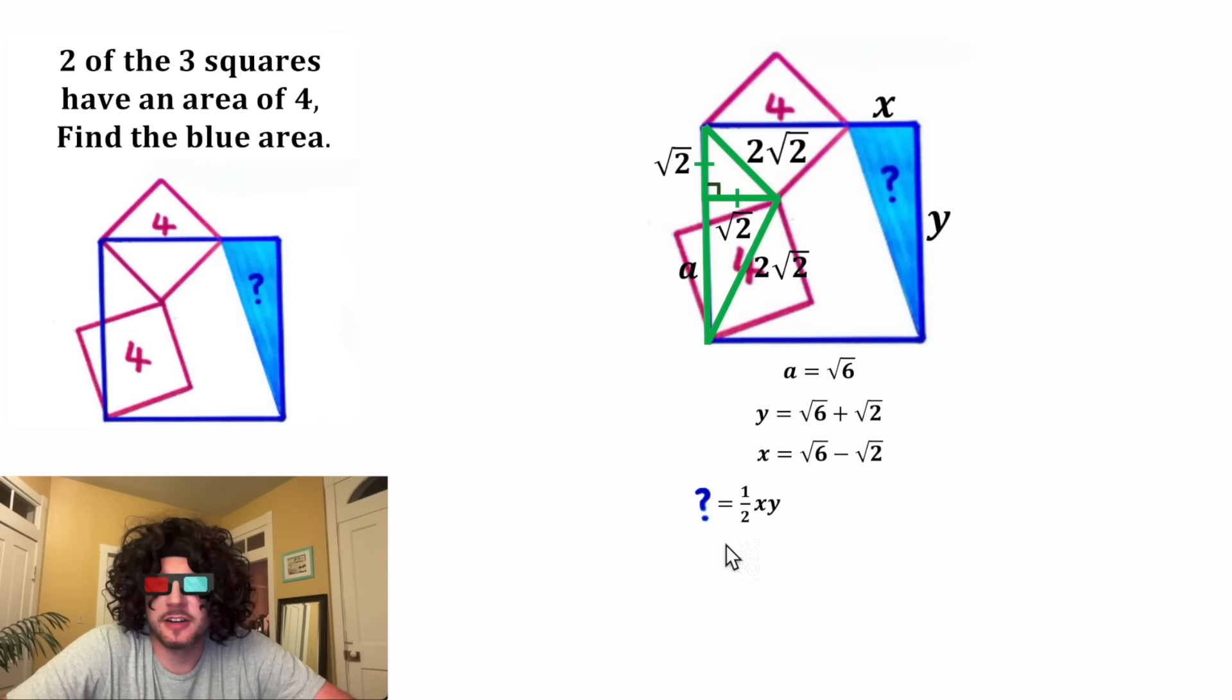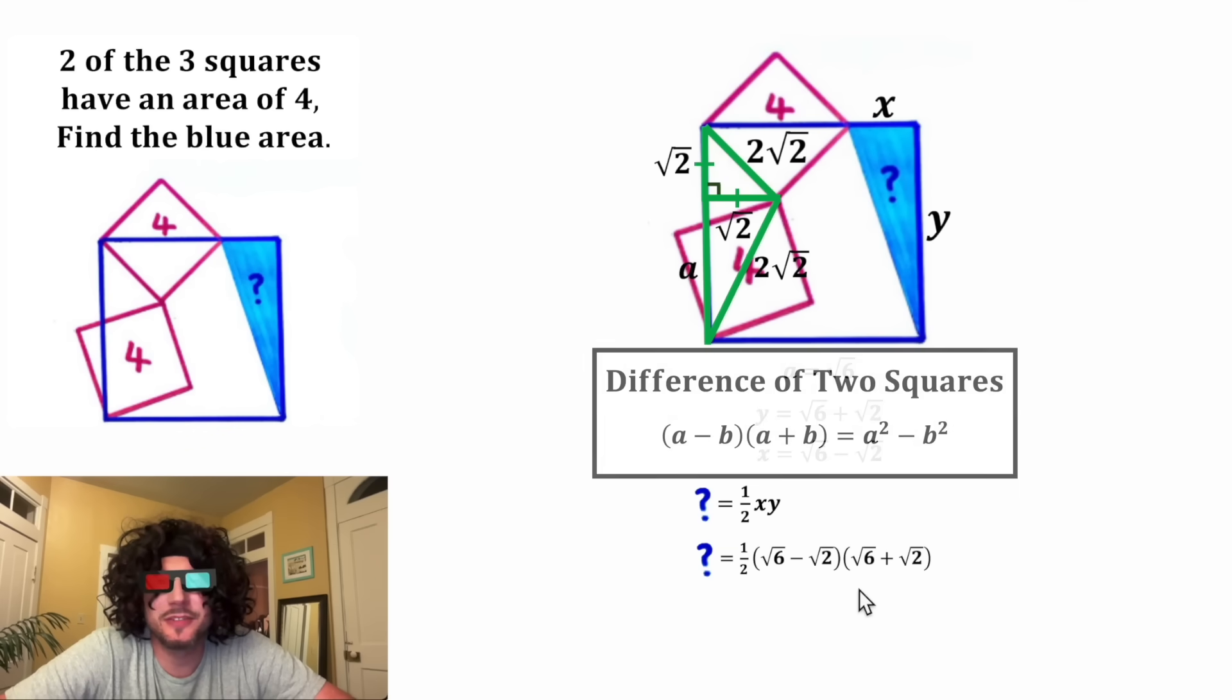Let's plug it into here. In the place of the X, we plug in root six minus root two. And in the place of the Y, we plug in root six plus root two. This is a difference of two squares. We can use these notes here.